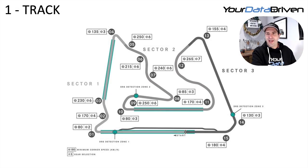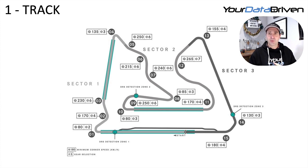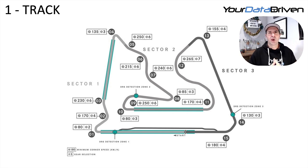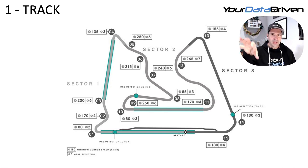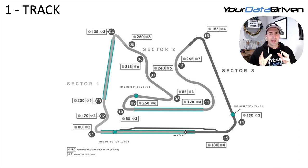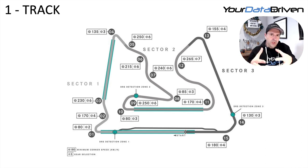Starting off, let's look at the track map — this is Bahrain. I grabbed it off the internet. The big thing you want to be aware of is the corner numbering. This track uses numbers rather than names. We're talking about turn one, turn four, turn ten, turn thirteen. You want to be really familiar with all the turns before you dive into the data.